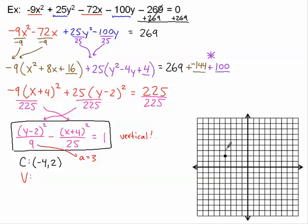So I'm going to be counting up and down 3. So these are the points (-4, 5) and (-4, -1).